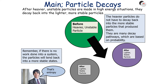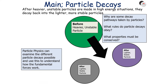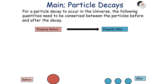The heavier particles do not have to decay back to the more stable particles that produced them, as there are many decay pathways which are based on probability. If no work is done into a system, the particles will tend back to more stable states. Particle physics can examine the different particle decays possible and use this to understand how the fundamental forces work — why are some decay pathways taken, what rules do particle decays obey, and what properties must be conserved?